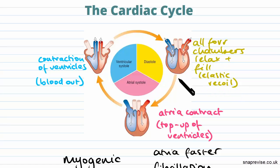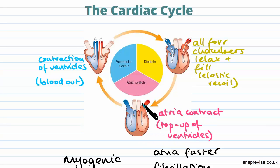That explains why the ventricles already have some blood in them, and we get all the way back to atrial systole where the atria contract again.